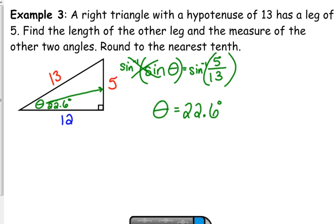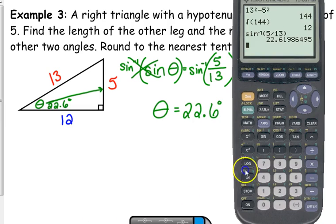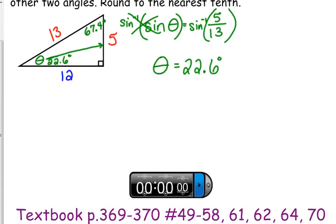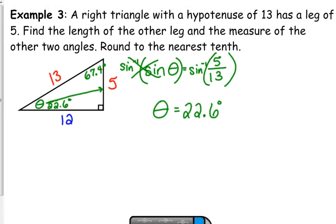And really, there's no point in doing the trig again to find that third angle. I would just do 90 minus that number. It's really easy in your calculator. If you do 90 minus, you can do second negative, and it will bring up the last answer. So 67.4 degrees is the third angle.